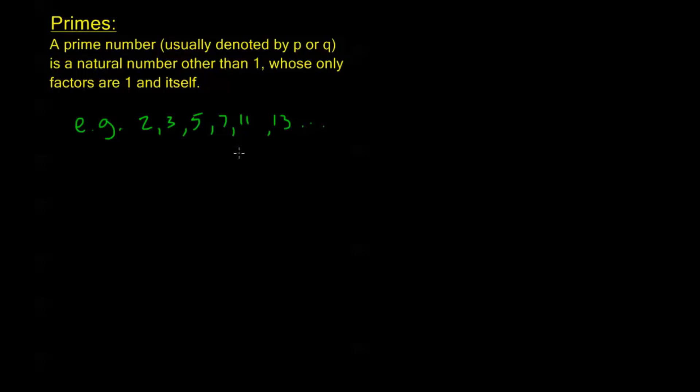It's just going to be all of these numbers that are only divisible by 1 and itself, and that's pretty easy to check. We know that nothing divides any of these numbers except for themselves and 1, or nothing positive.